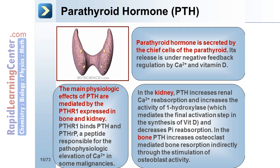In the kidney, PTH increases renal calcium reabsorption and increases the activity of 1-hydroxylase, which mediates the final activation step in the synthesis of vitamin D, and also decreases phosphate reabsorption. In the bone, PTH increases osteoclast-mediated bone resorption indirectly through the stimulation of osteoblast activity.